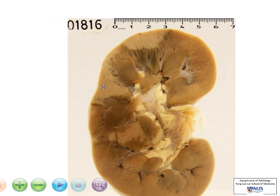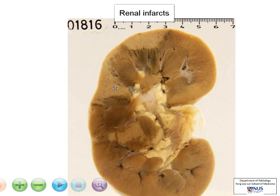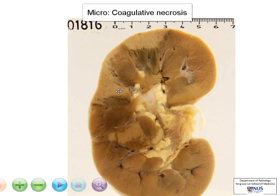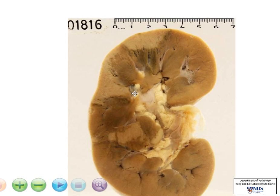These pale areas correspond to renal infarcts, and what we will look at under the microscope would be areas of coagulative necrosis, and this is due to ischemia, or decreased blood supply.